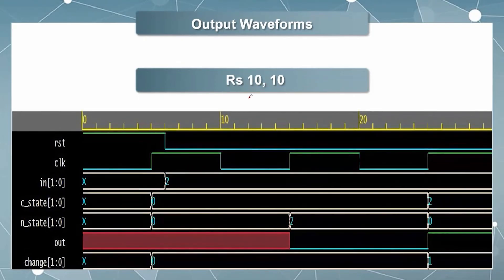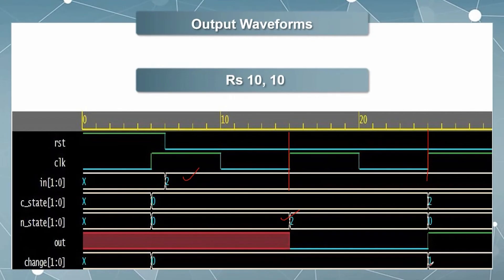What happens if we add rupees 10 two times? The input is 2. The next state changes from state 0 to state 2. At the second positive edge, adding 10 again means that the next state has to change from state 2 to state 0 because the vending machine now holds rupees 20 — enough for one product. However, a change of rupees 5 has to be returned. So the output turns 1 and the change is also 1, signifying that 5 rupees is to be returned to the customer as change.